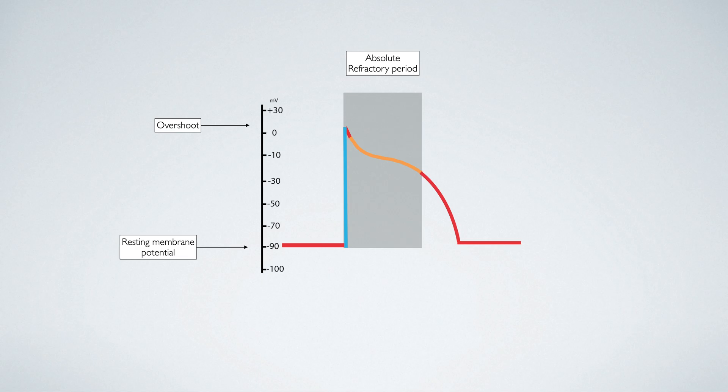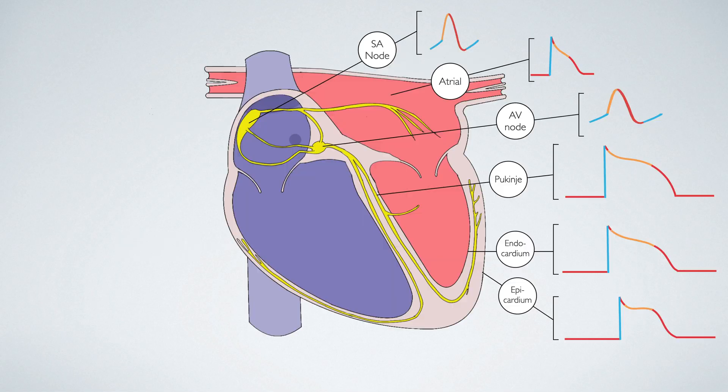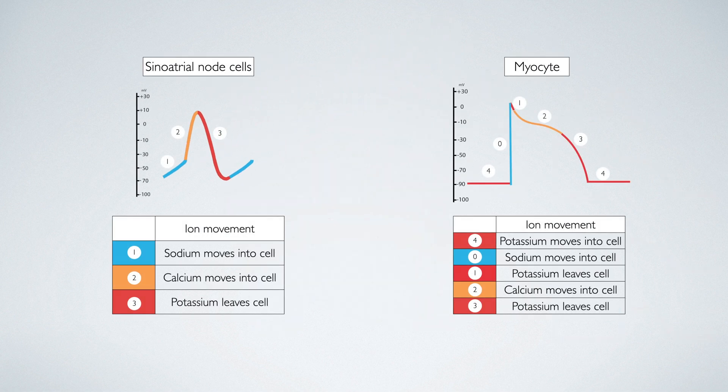Following this is the relative refractory period. During this time, the myocyte can generate action potentials, but only if the stimulus is strong enough. It is not essential to know all of these action potentials in detail, but it is worth paying attention to the action potential from the sinoatrial node and from the ventricular myocyte.